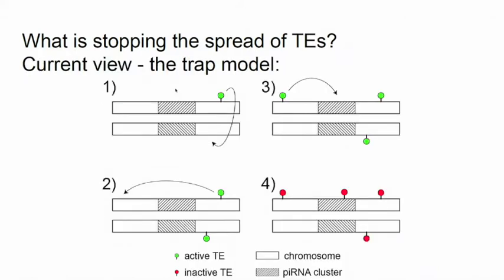One hypothesis is the trap model. The hatched area is a trap — a piRNA cluster. If the transposon jumps into the trap, it's dead. Green means active transposon. You have two active copies jumping around, and then one goes into the piRNA cluster. What happens then is they're all dead. Just imagine a house full of mice amplifying everywhere — and suddenly just one goes into a mousetrap, and they're all dead. You don't need to kill each one separately; one in the trap is enough to generate piRNAs that stop them all.